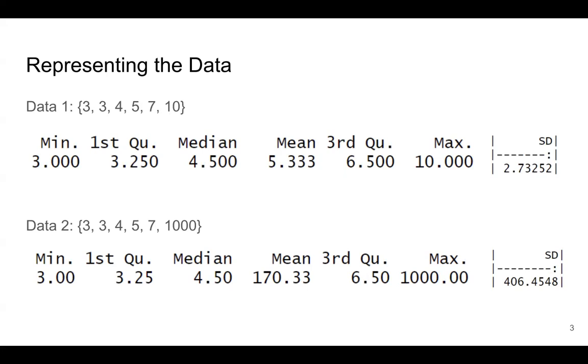What about data two? Data two has 3, 3, 4, 5, 7 and now 1,000. Now the mean of data two is 170.33. And the standard deviation is 406.45.